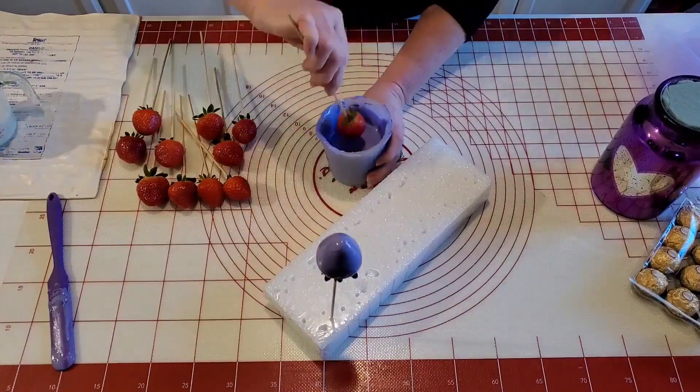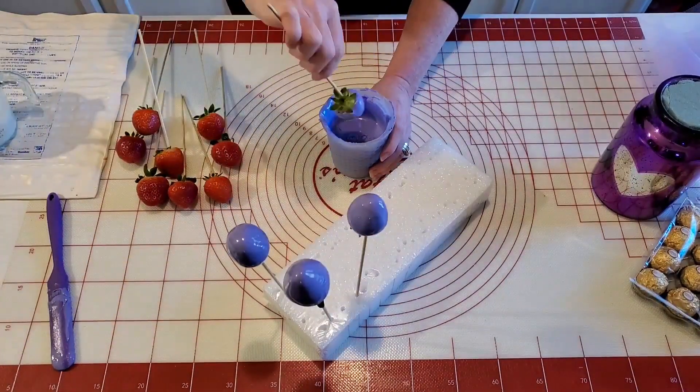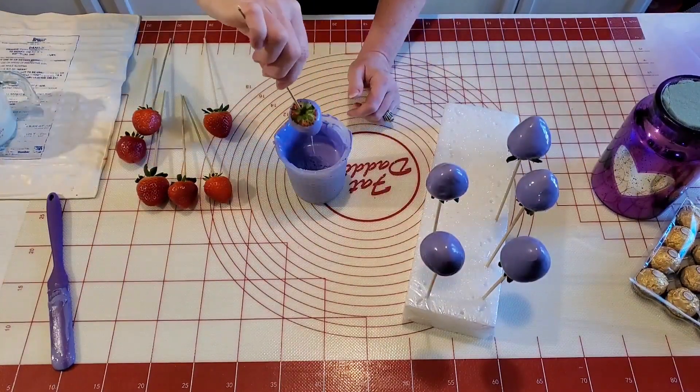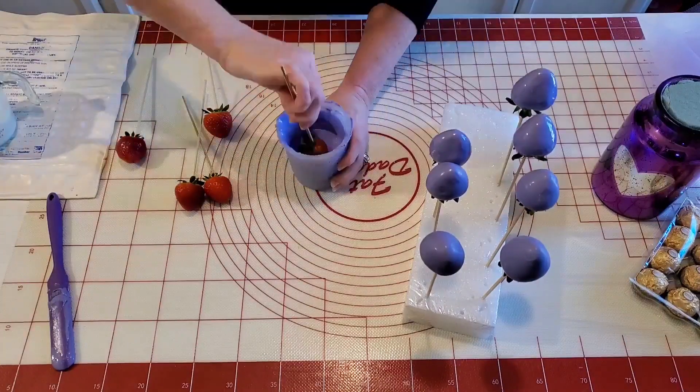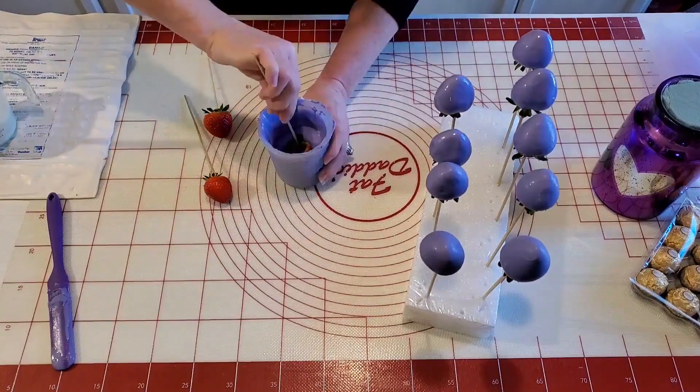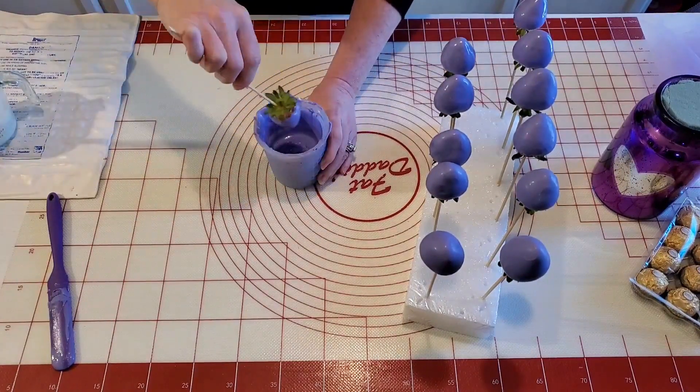And I have melted down some white chocolate, and I actually used the color violet Chef Master candy color to get to the purple shade that I wanted for these strawberries. So now I'm just dipping my strawberries and sticking them in the styrofoam so that we can let that chocolate set and do a little decor on them.